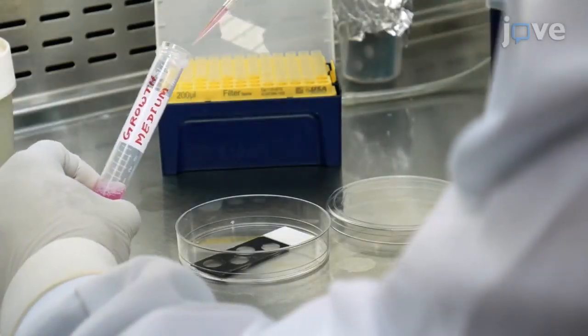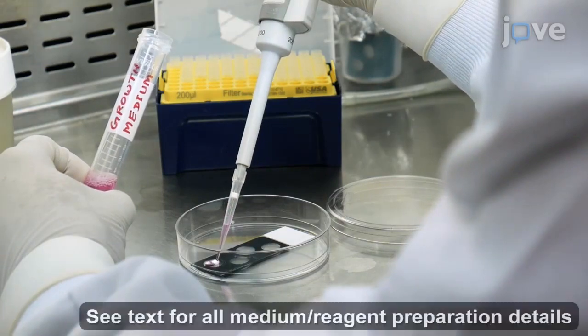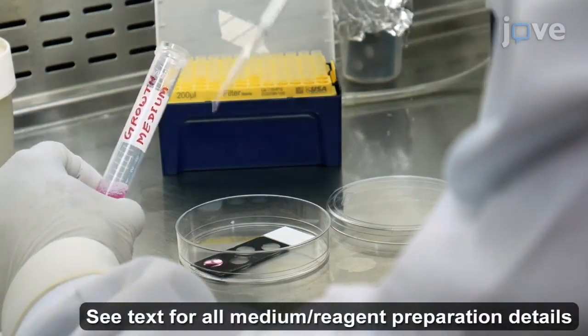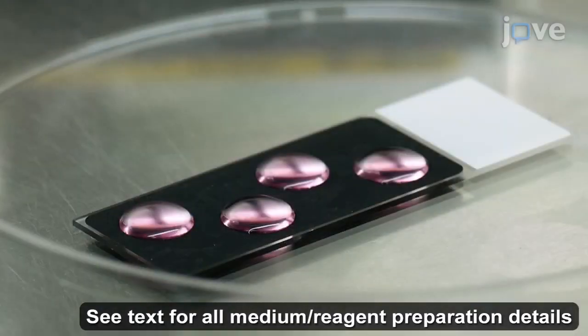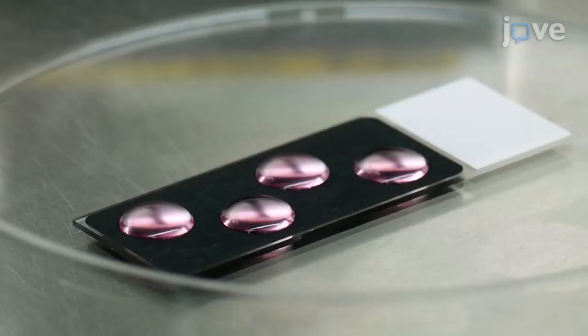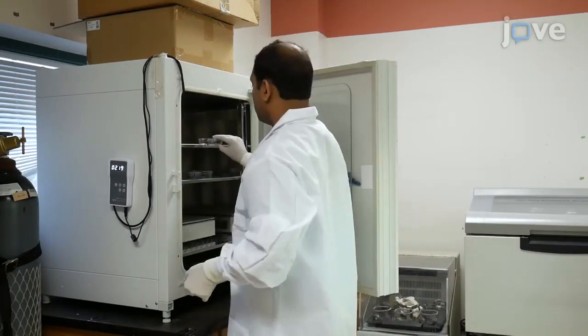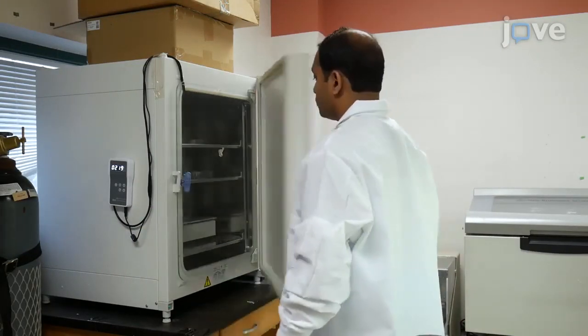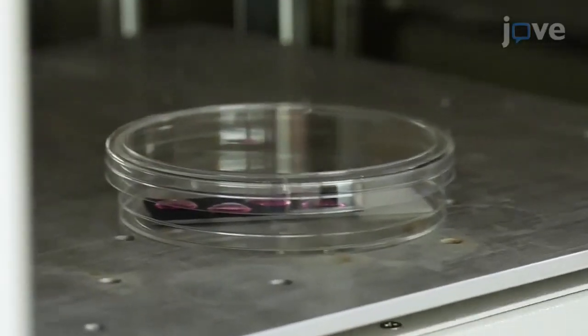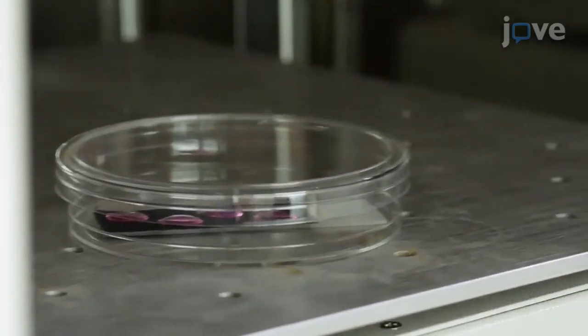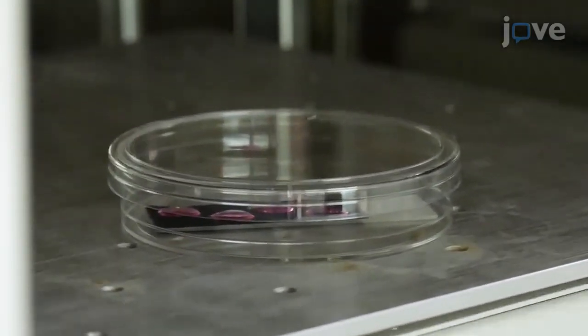20 to 24 hours before the virus infection, seed 5 x 10 to the 4 human embryonic lung or HEL fibroblast cells per well onto a 4-well 11 mm staggered slide in growth medium for overnight incubation at 37 degrees Celsius with 5% carbon dioxide. It is important to rock the slide thoroughly to ensure an even distribution of the cells while taking care to avoid spilling the culture medium.